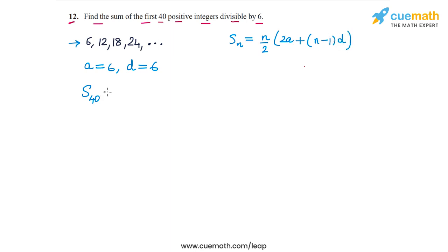So S_40 will be equal to 40/2, because n is 40, times 2a. So 2 into 6 plus n minus 1. So n is 40, so n minus 1 is 39. So 39 into d, d is 6. This is the expression that we get for S_40.